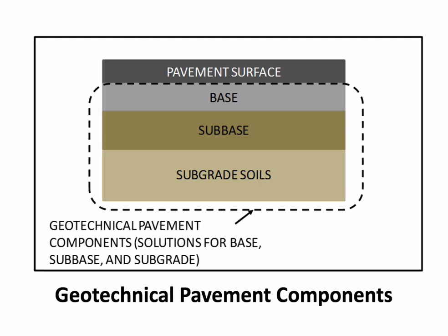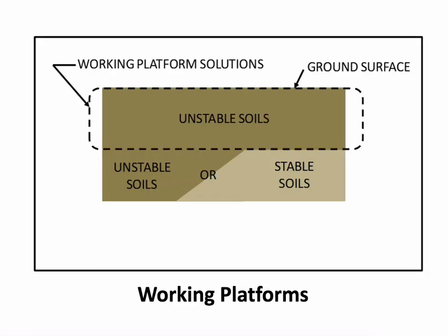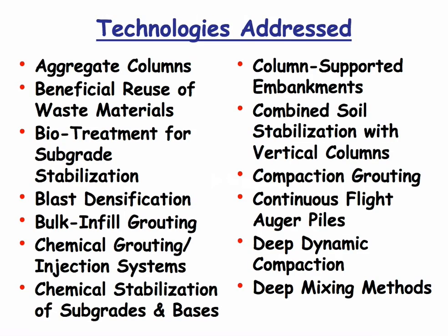The next two elements deal with the pavement subgrade, base, and sub-base. One is the geotechnical pavement component — looking at subgrade soils, sub-base and base, for permanent applications. The other covers unstable soils where we need a working platform or haul road — a temporary application. The next slides show all technologies addressed in the system. There are 48 of them, including chemical stabilization of subgrade, continuous flight auger piles, deep dynamic compaction, column-supported embankments, and even newer ones like biotreatment for subgrade stabilization.